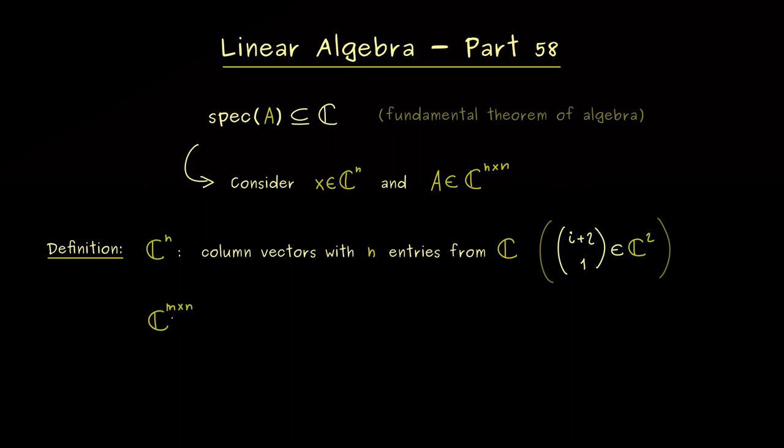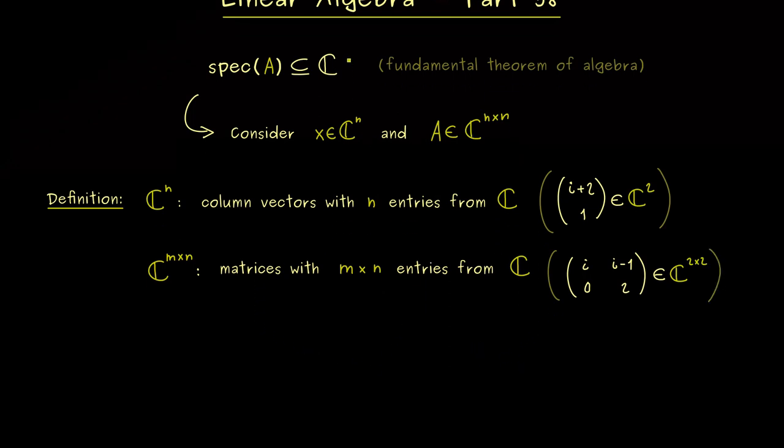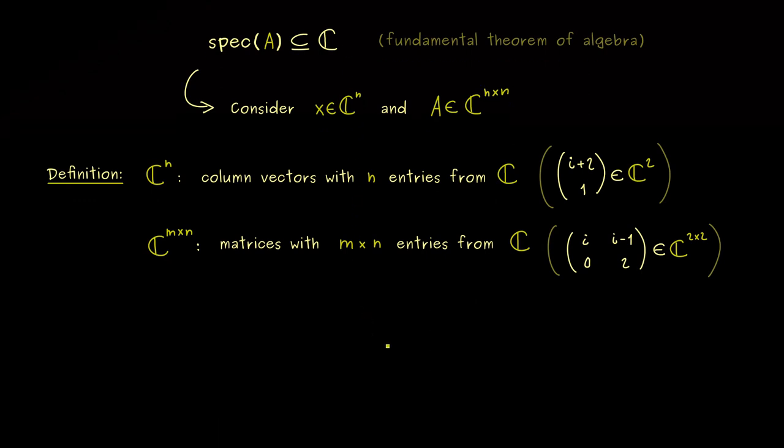So not complicated at all but something we have to write down. And we have the same for the matrices. For an m times n matrix we write C to the power m times n. Also there we just look at an example and then you know how it works. So we could have i, 0 and i minus 1, 2. Indeed this is a well defined 2 times 2 matrix.